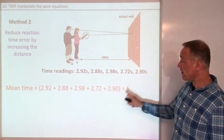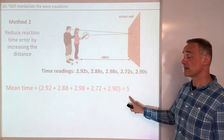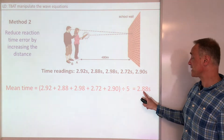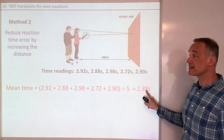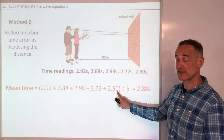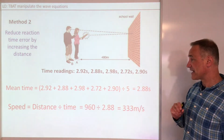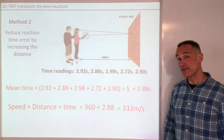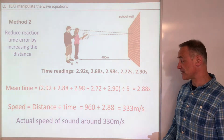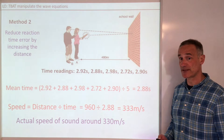This time we've got 5 sets of data with no outliers, so dividing by 5 gives a mean of 2.88 seconds. That gives a speed of 333 metres per second. The actual speed of sound is around 330, so much closer.